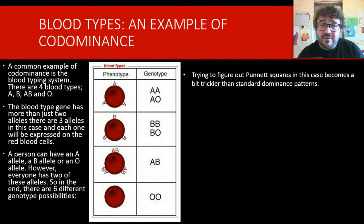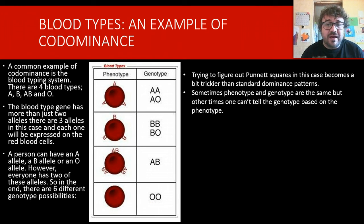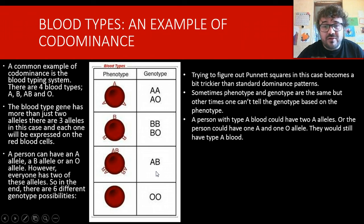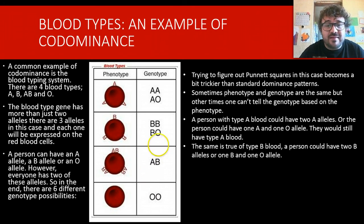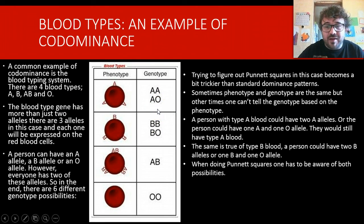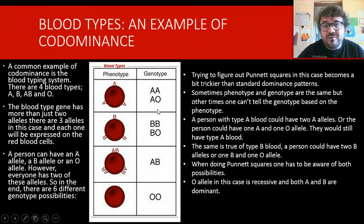Now, we can figure out, it's a bit trickier than with standard dominance patterns, but we can figure this out. So, basically, sometimes the phenotype and genotypes are the same, and we can't tell the difference. We can't tell which genotype you have. That's for A and B. But the other ones, we can tell you exactly what your genotype is. So, AA could be AA or AO, BB could be BB or BO.